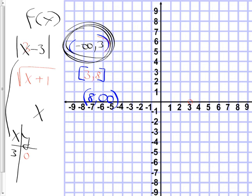Now I pick things smaller than that, like 2. When I put in a 2, 2 minus 3 is negative 1, but the absolute value makes it 1. So that's 2 comma 1. I can tell where this is going — it's a V shape. If I check x equals negative 1: negative 1 minus 3 is negative 4, absolute value makes positive 4. So negative 1 comma 4. I confirmed it. So I can just go like that all the way to the end. That's the beginning of the graph.